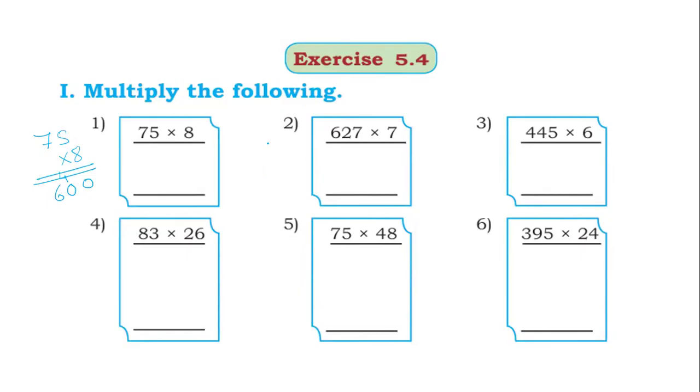Next, second one. 627 into 7. 7 sevens are 49, 9 carry 4. 7 twos are 14, 14 plus 4, 18. 8 carry 1. 7 sixes are 42, 42 plus 1, 43. 4389 is the answer.